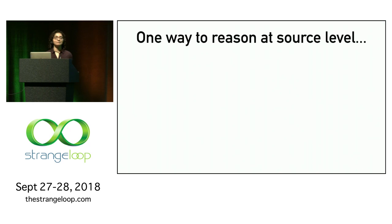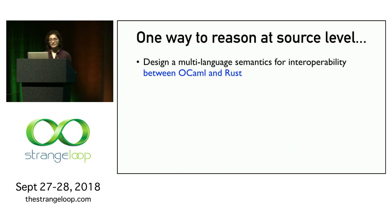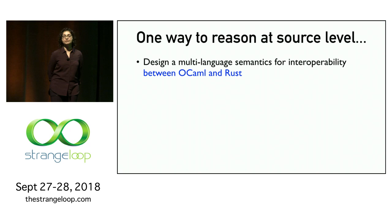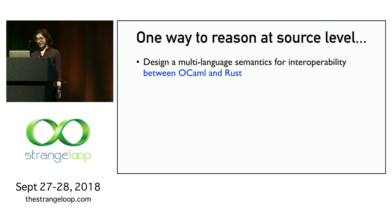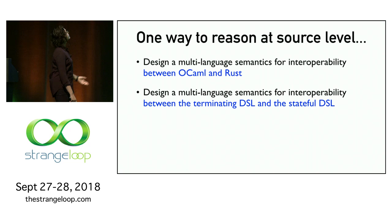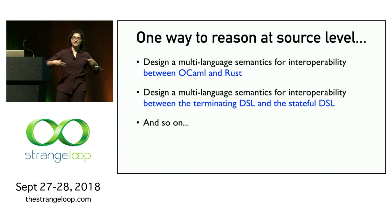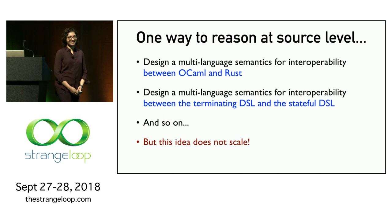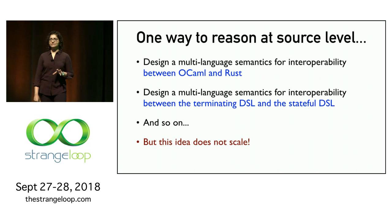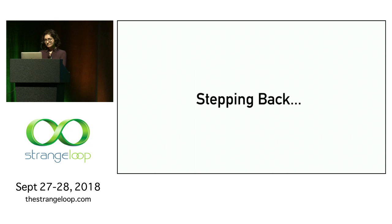Before I give a proposal, let's look at one approach. We could start designing multilanguages that give you a semantics of interoperability between the two languages we want to put together — for example, a multilanguage for OCaml and Rust, or one for the terminating DSL and the stateful DSL. But if there are N different languages in the world and we need to define pairwise interoperability between all of them, this is an N-squared problem. The idea does not scale, and I do not want to propose an N-squared solution.